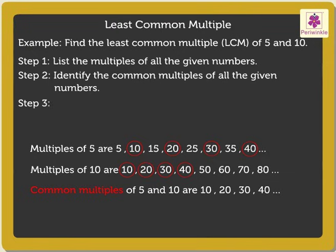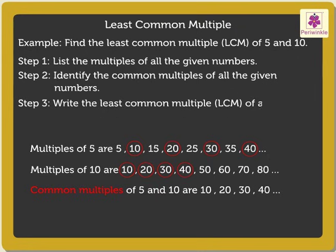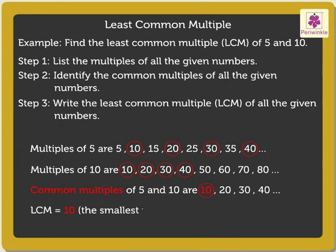Step 3: Write the least common multiple of all the given numbers. Here, the least common multiple is 10. Thus, LCM is 10, which is the smallest number of the common multiples.